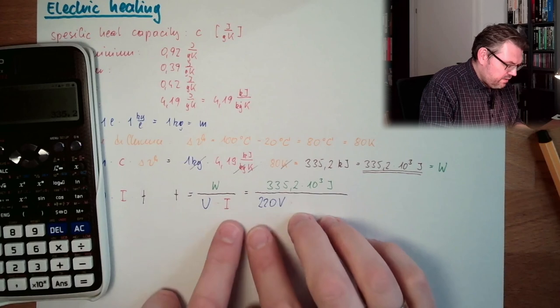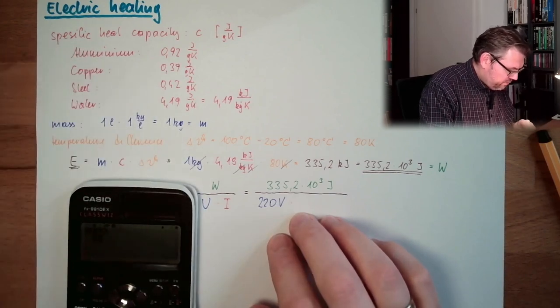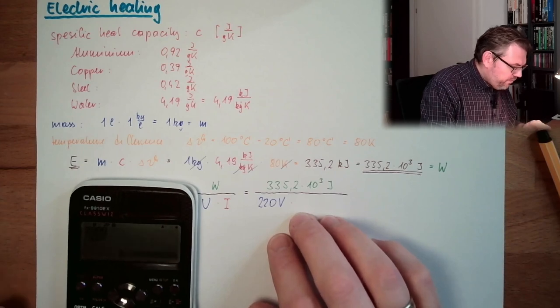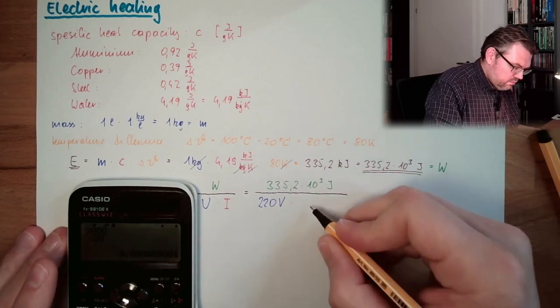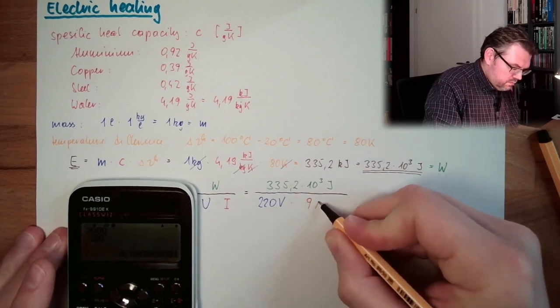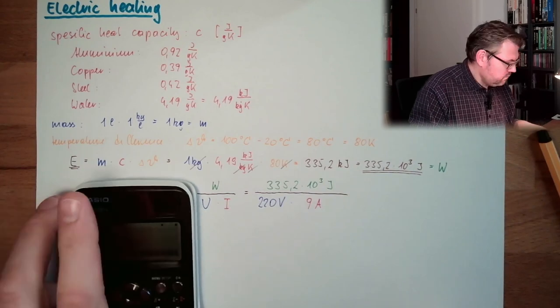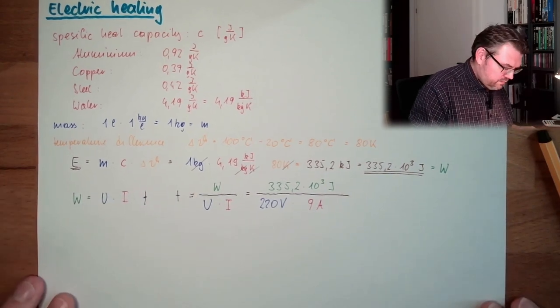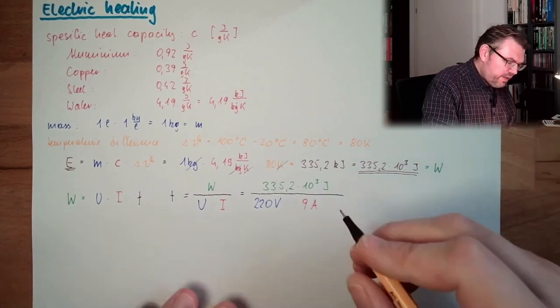So, we have 220 volts. It's alternating current, but this is not that important right now, because it's the effective value. We will talk about this later. And now the current, I'm going to calculate this now. We have 2,000 watts divided by 220 is 9.09 ampere roughly. So, these are the values.